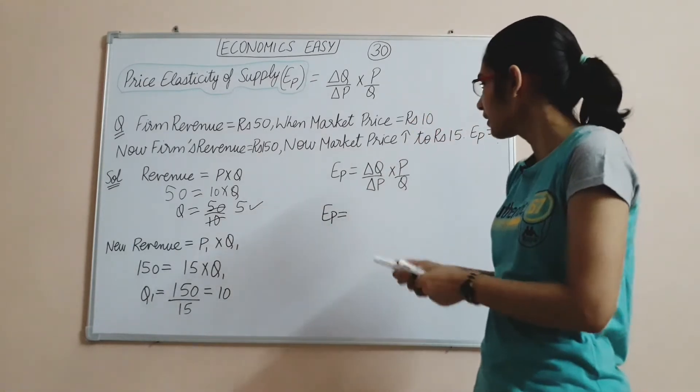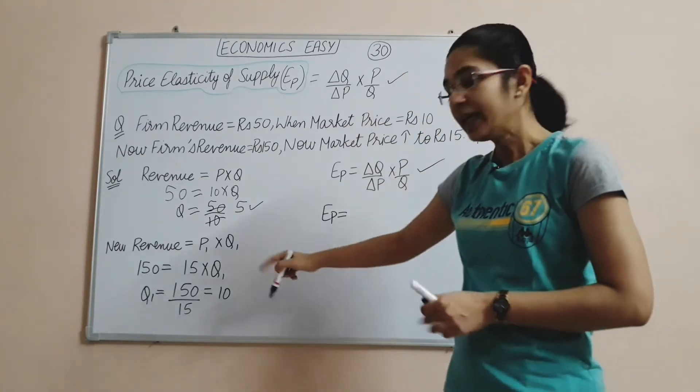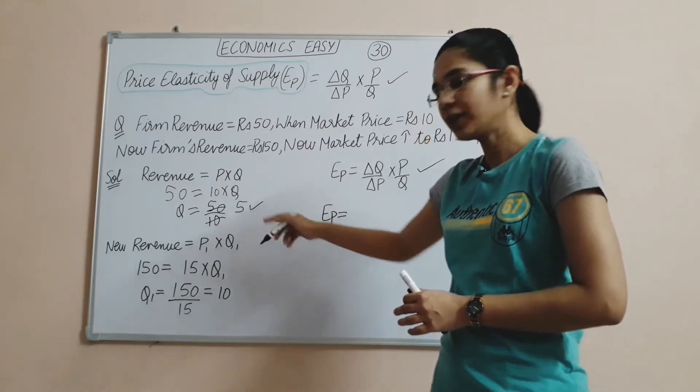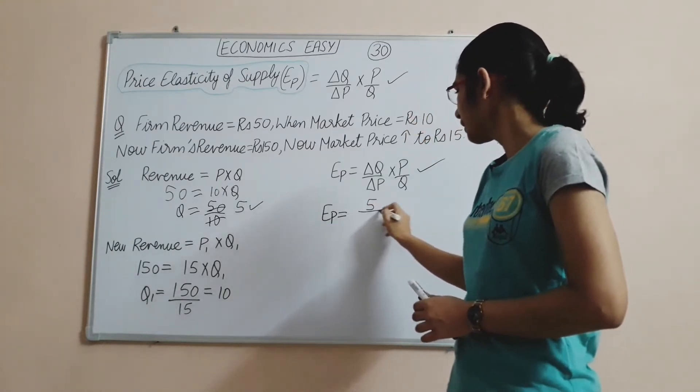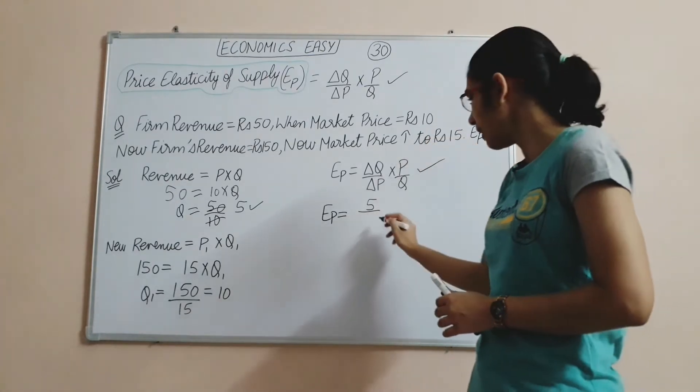We will put our values in the formula. Change in Q: we will subtract the old from the new. 10 minus 5 equals 5. Change in P: 15 minus 10 equals 5.